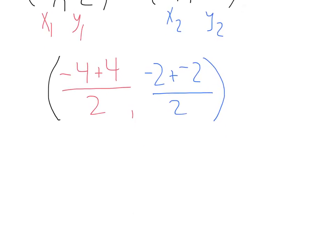Solving from there, negative 4 plus 4 is 0. That's going to give me 0 over 2. Here, I have negative 2 plus negative 2. That's negative 4, all divided by 2.